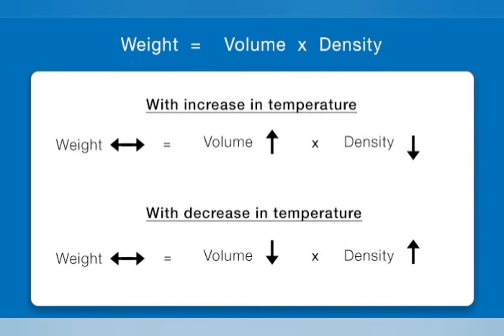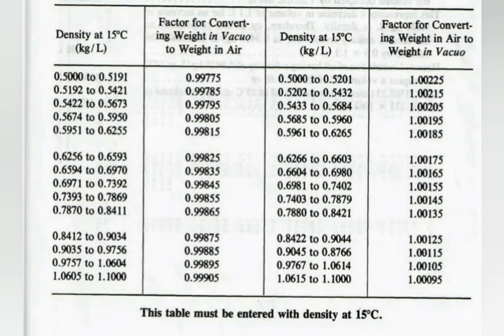The cargo surveyor will provide one of the following: density at a particular temperature and correction factor, a table of densities at different temperatures, density at 15°C and ASTM table to use, or API gravity at 60°F and ASTM table to use.